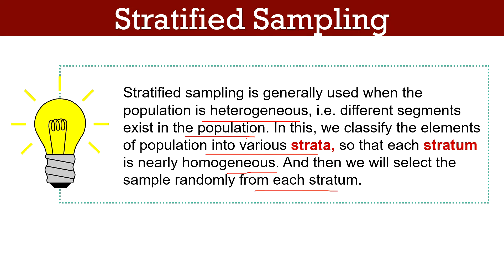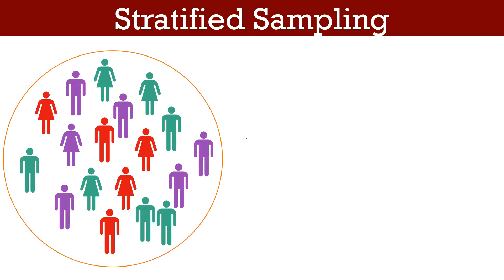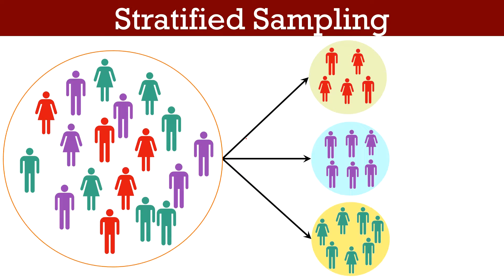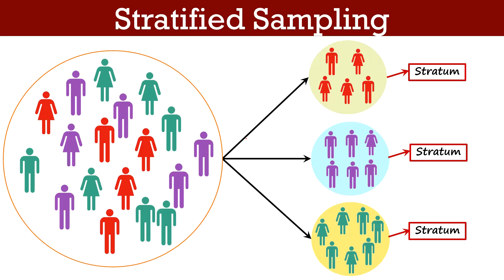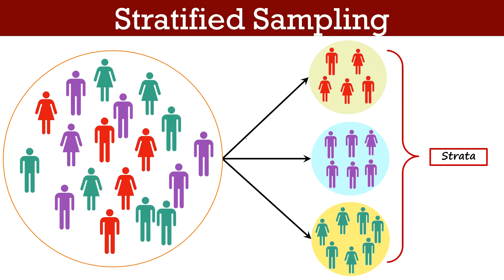In stratified sampling, the total elements of the population are first subdivided into distinct and mutually exclusive subpopulations called strata, based on some common characteristics. Note that stratum is the single subgroup or category whereas strata is the plural of stratum, referring to several subgroups. Each stratum should be relatively homogeneous and strata should contrast each other.